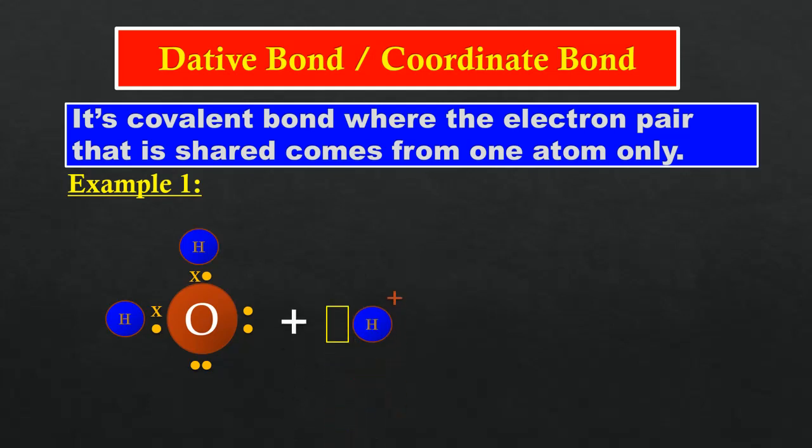Hydrogen ion does not have any electrons in the shell. The lone pair of electrons not involved in the covalent bond in the water molecule will be shared with the hydrogen ion through the formation of a dative bond.